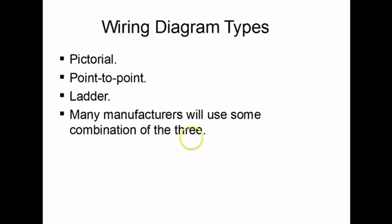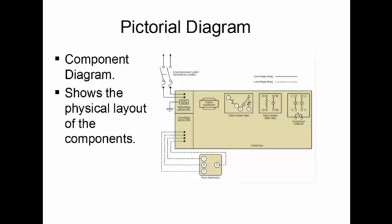So the first diagram we're going to look at is the pictorial diagram. This is one that you'll find on a larger commercial unit that has quite a few electrical components. The diagram shows the physical layout and the relationship of the components to each other physically. So in this pictorial diagram we have the compressor contactor, the indoor blower delay relay, the indoor blower relay, and the control transformer on the diagram itself.